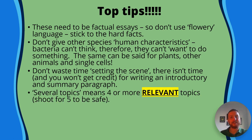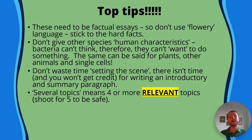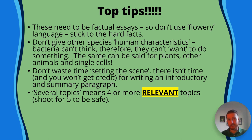AQA defines several topics as four or more relevant topics required. I always tell my students to shoot for five, just to be safe in case they accidentally include an irrelevant topic — which can happen when you're under pressure. If you shoot for five or six topics, you give yourself a little wiggle room to still get into the top grade boundaries and achieve an A-star even with an irrelevant topic included.